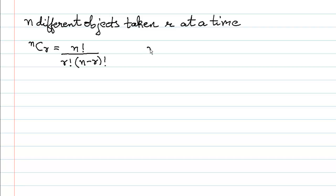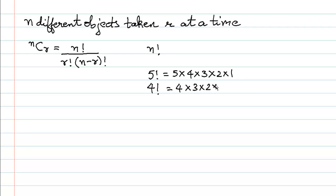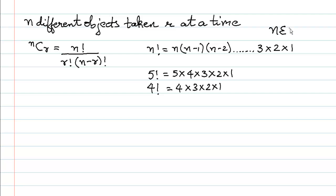Let us understand what n factorial means. For example, 5 factorial is 5 into 4 into 3 into 2 into 1. Similarly, 4 factorial is 4 into 3 into 2 into 1. In general, n factorial is n into (n−1) into (n−2) and so on till 1, where n is any natural number. We also define 0 factorial as equal to 1.